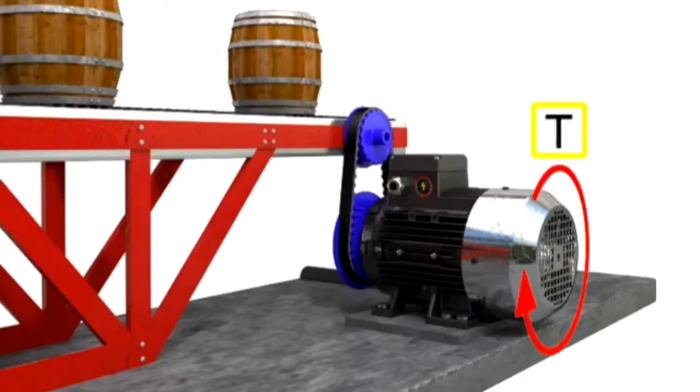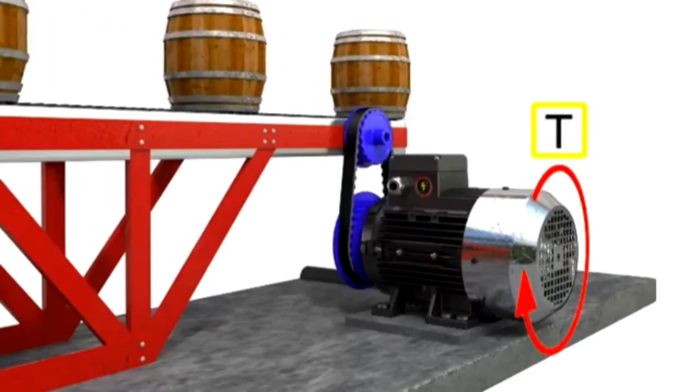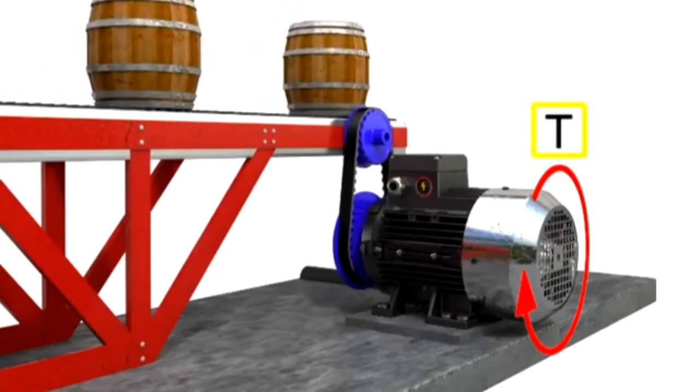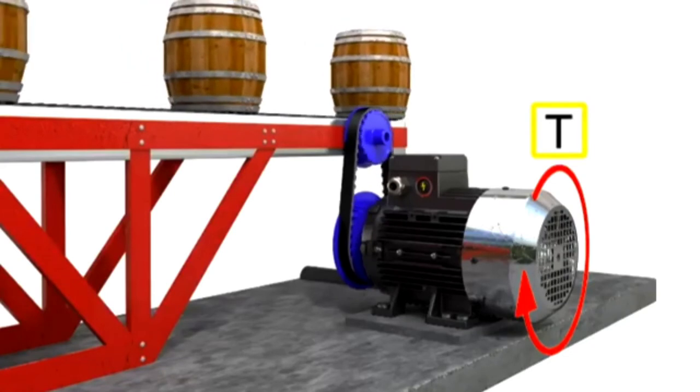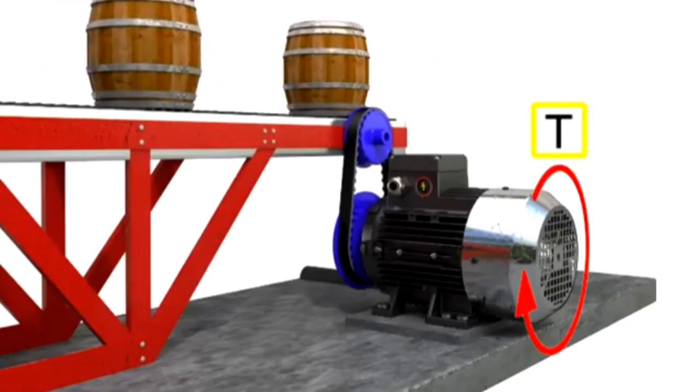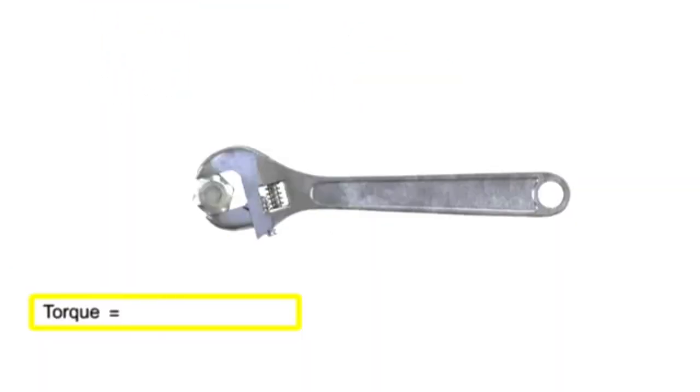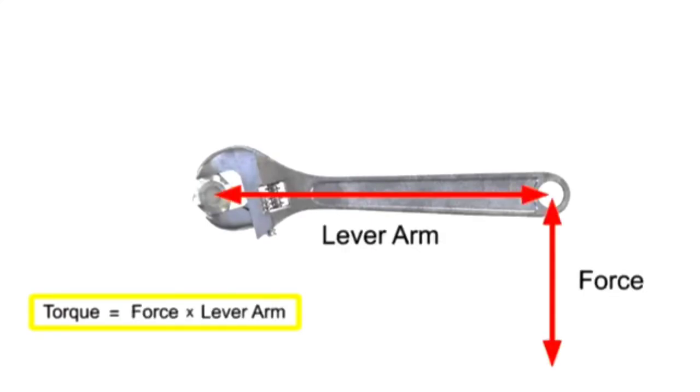Torque in a rotary device is the counterpart to force in a cylinder. Torque is defined as a strength which, if sufficient, will cause rotary motion in a rotatable body. Torque can be mathematically expressed as a force times a lever arm distance.